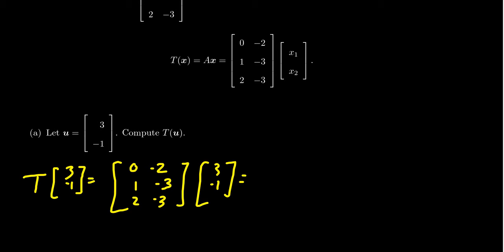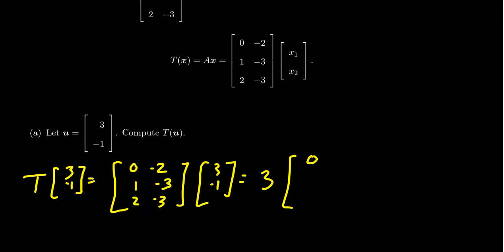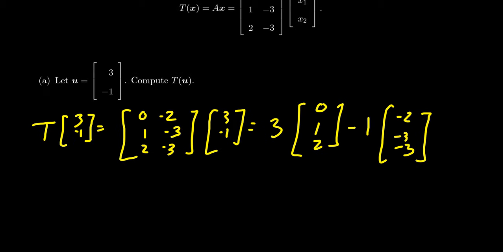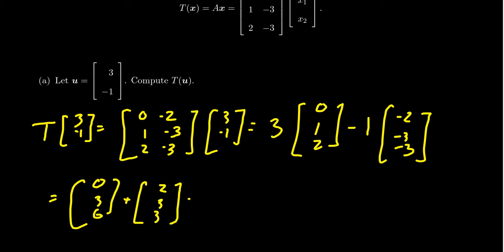Matrix-vector multiplication gives us a linear combination of the column vectors scaled by the entries of the input vector. So this is 3 times (0, 1, 2) plus (−1) times (−2, −3, −3). Multiplying through: 3 times the first column gives (0, 3, 6), and −1 times the second gives (2, 3, 3). Combining components: 0 + 2 = 2, 3 + 3 = 6, 6 + 3 = 9. So u = (3, −1) maps to the vector (2, 6, 9).